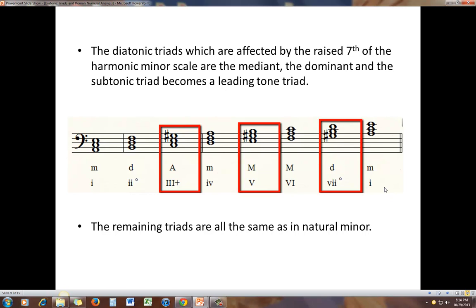So diatonic triads which are affected by this raised seventh of the harmonic minor scale are the mediant, the dominant, and the subtonic triad becomes a leading tone triad. All the rest of the triads remain exactly the same as they were in natural minor. Here we have the G sharp, which is that raised seventh in an A minor scale.